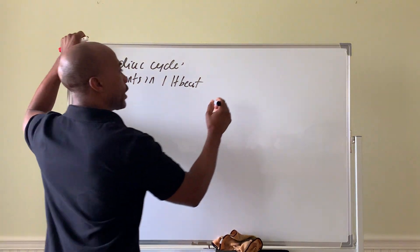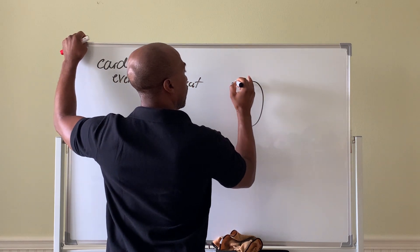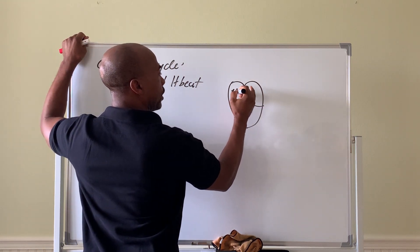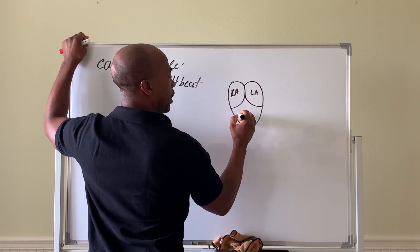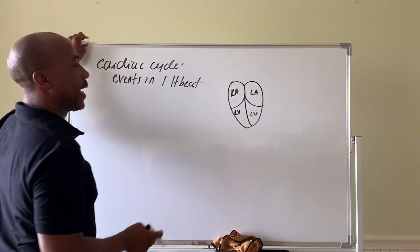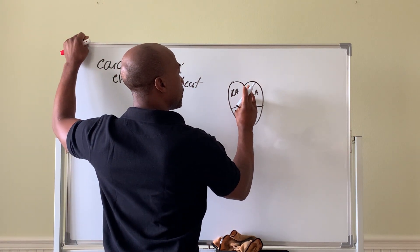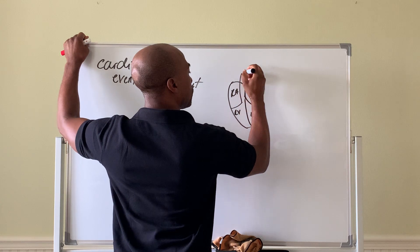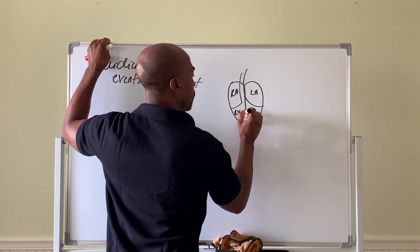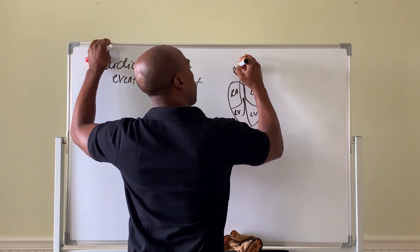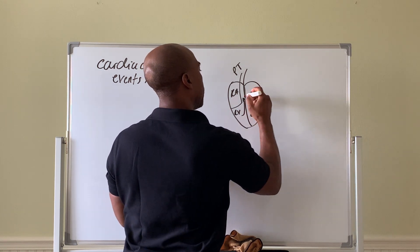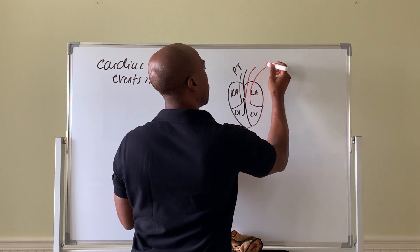So first, just some background. The heart has four chambers: a right atrium, left atrium, right ventricle, and left ventricle. The ventricles, the lower chambers, push blood out — they are your chambers of ejection. The right ventricle will push its blood out into the pulmonary trunk, whereas the left ventricle will eject its blood into the aorta.